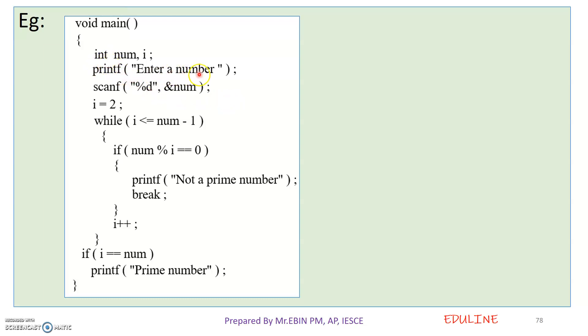Then we have a printf statement: enter a number. We need to save this variable using scanf. Then i is equal to 2 for the loop initialization.